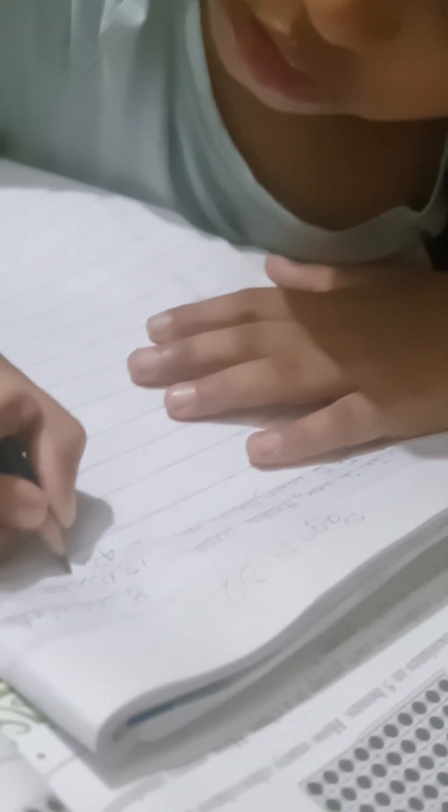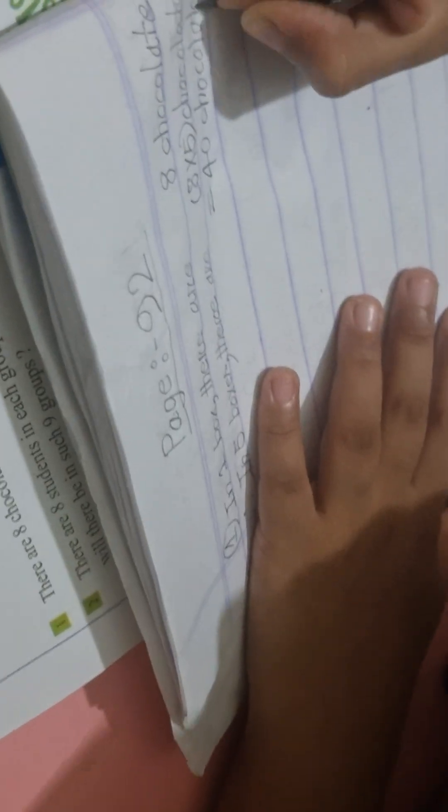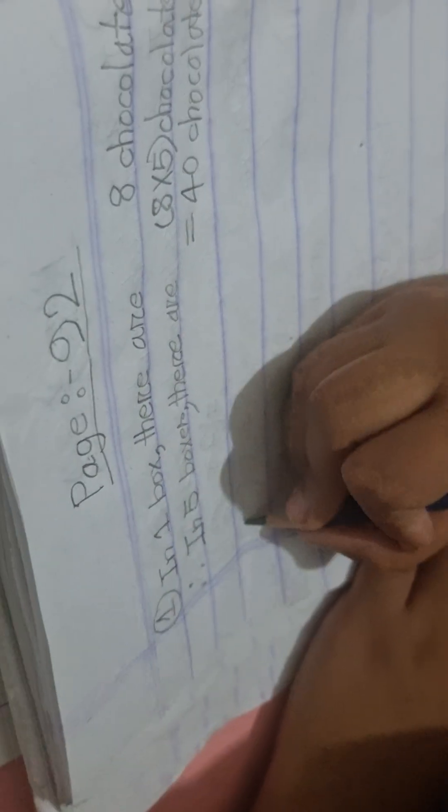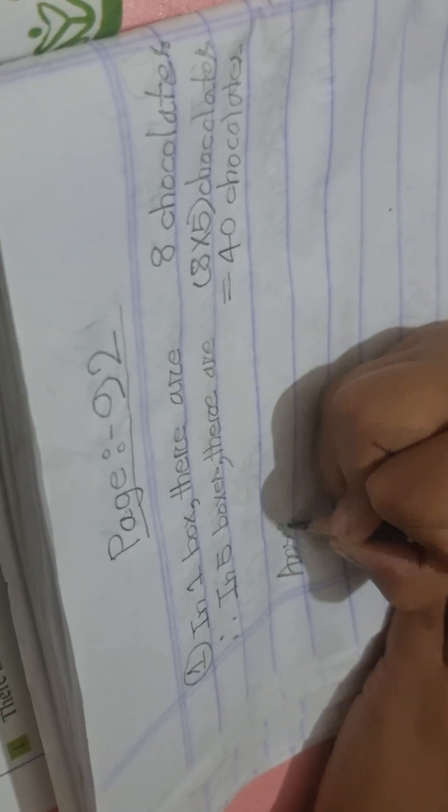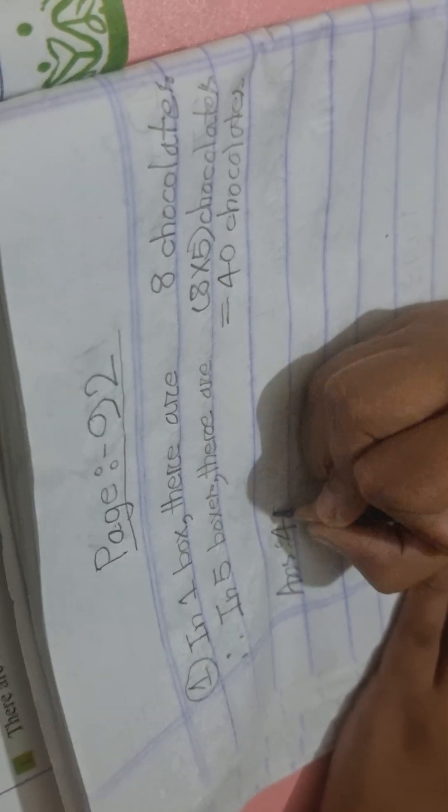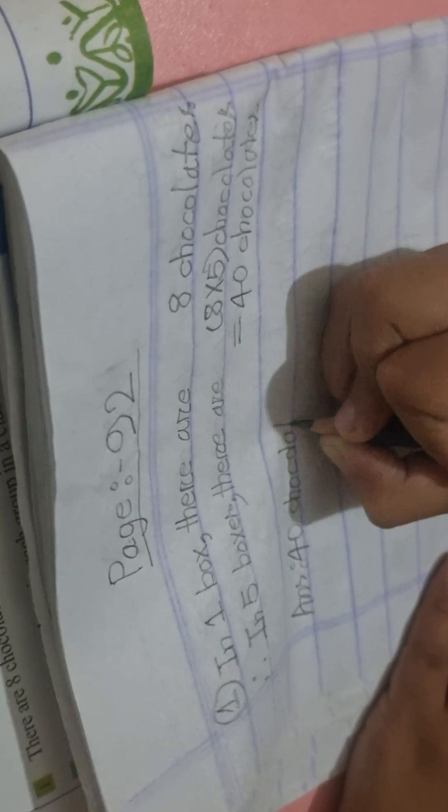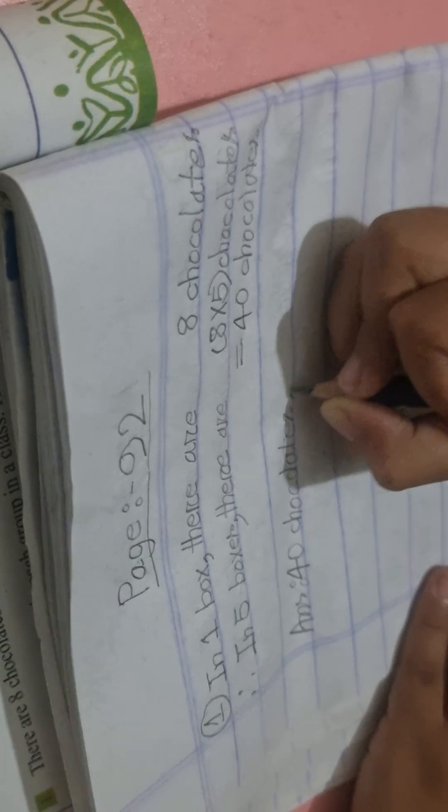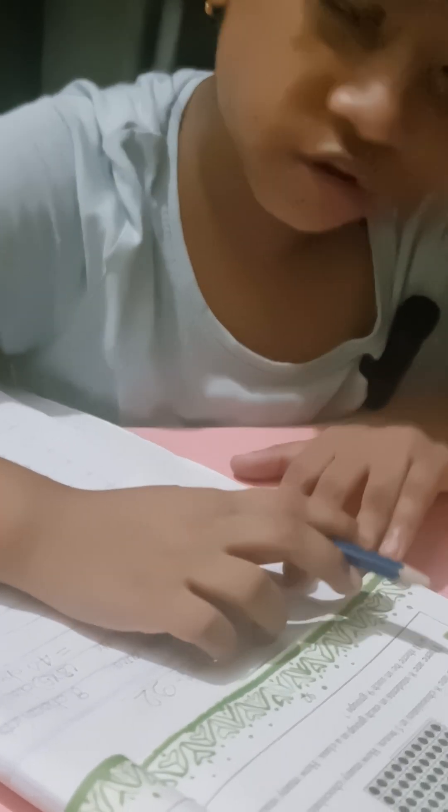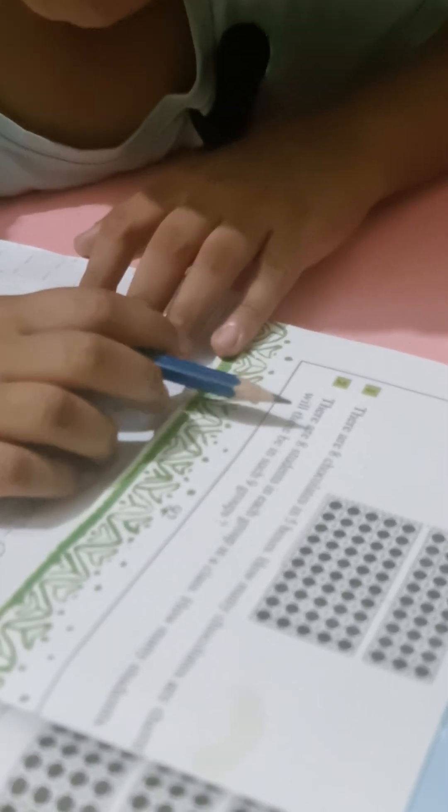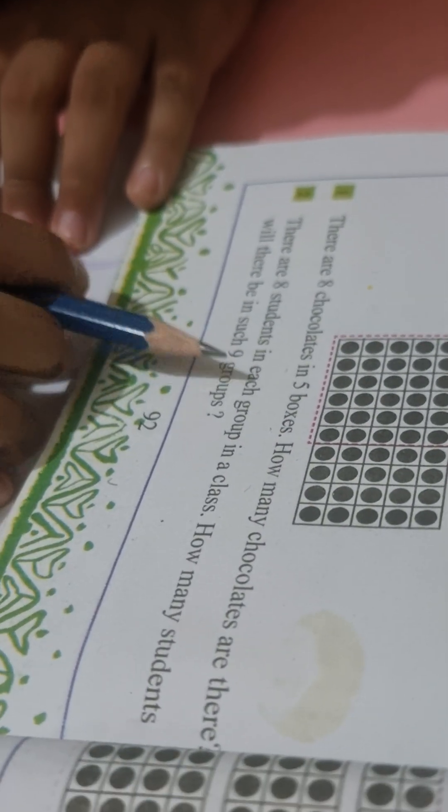Problem: there are eight students in each group in a class. How many students will there be in such nine groups?